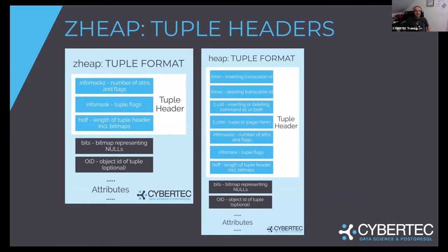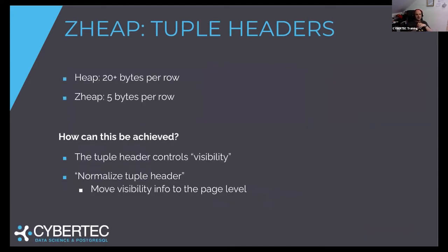Tuple headers — that's a major thing. On the left-hand side is the tuple header of Z-Heap; on the right-hand side is the tuple header of a standard Postgres heap table. There is already a major difference. The Postgres tuple header is 20-plus bytes, and there is a lot more information in it. Z-Heap is ways more efficient. A standard row in Postgres has more than 20 bytes of overhead, whereas the Z-Heap tuple header is only 5 bytes. So we're already saving something in the order of 20 bytes per row. If we're talking about a billion rows, that's 20 gigabytes just for the header alone.